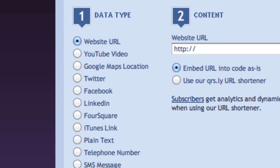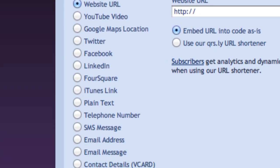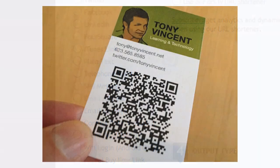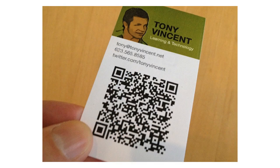Check out the other data types that qrstuff.com supports, including Google Maps locations, calendar events, and contact details. Contact details is the one I use to make the QR code on my business card.